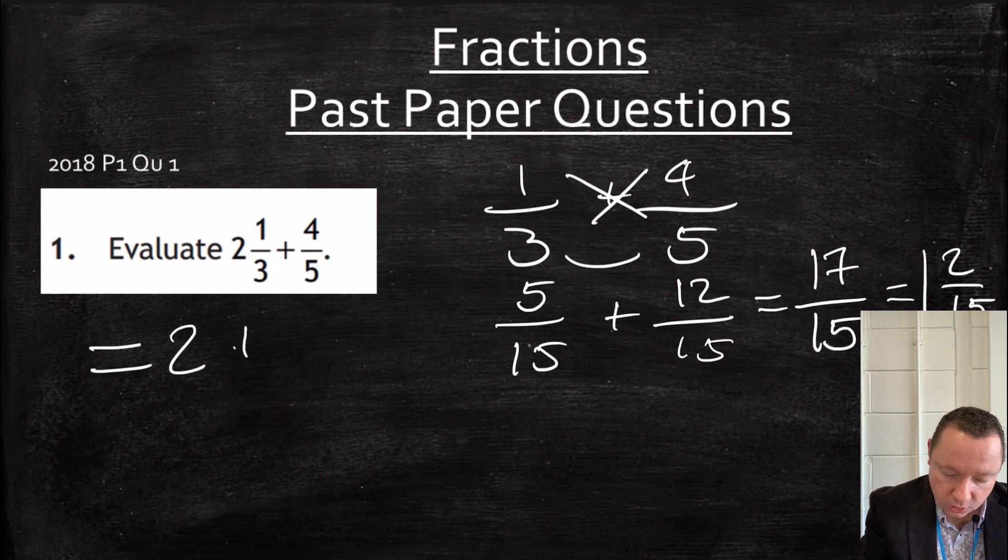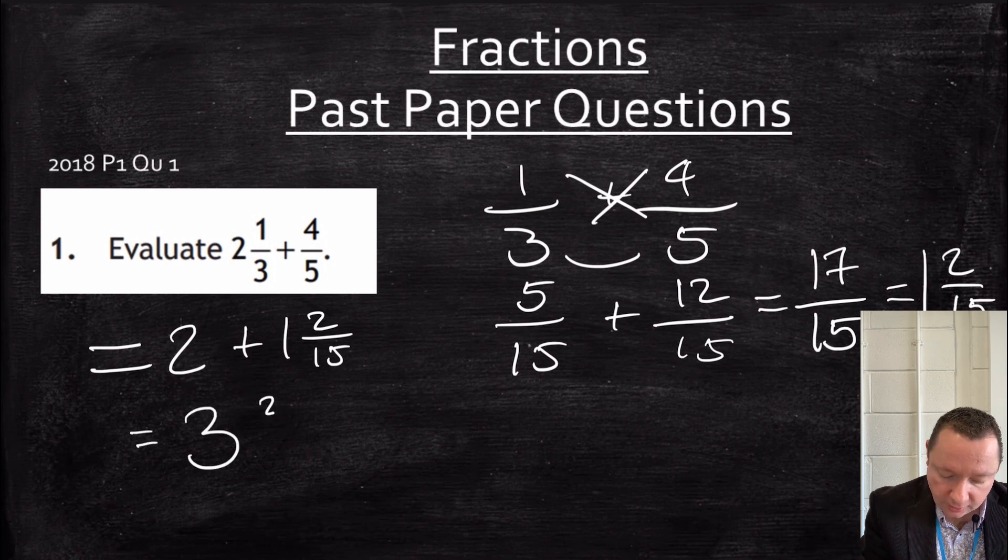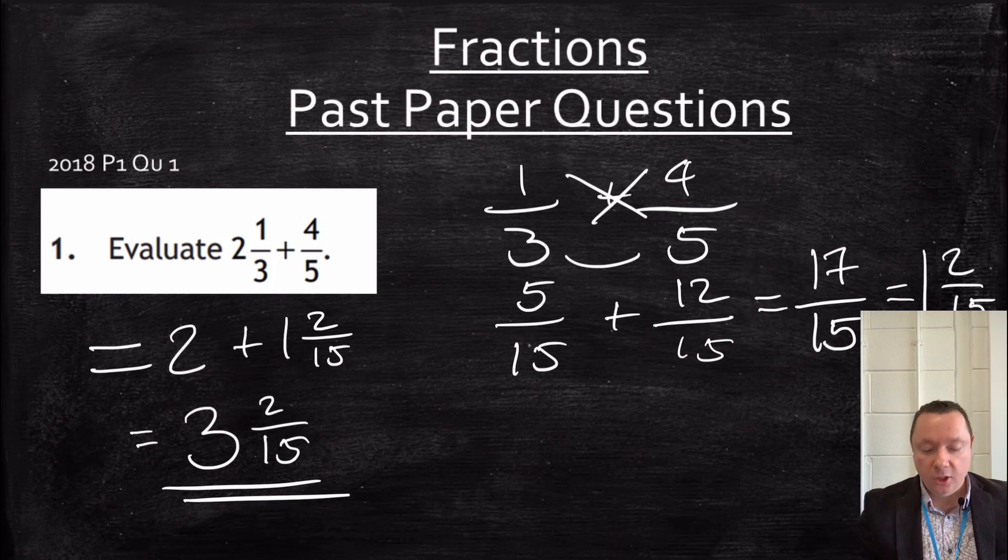Because 15 goes into 17 one time with 2 remainder. So the answer to the question, I've got 2, remember. So I've got 2 plus 1 and 2 fifteenths. Which means I've got 3 and 2 fifteenths. Again, remember, the only way you could have done this question is to change the 2 and a third into an improper fraction and then added and simplified.